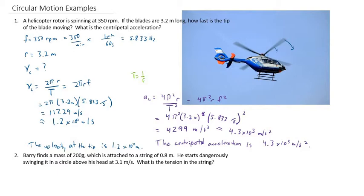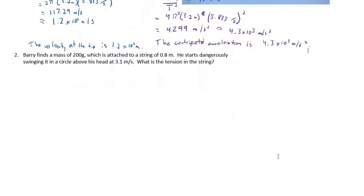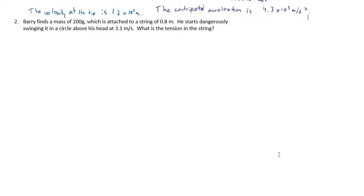Cool. Let's try another example. Barry finds a mass of 200 grams, which is attached to a string of 0.8 meters. And since Barry is a dangerous person, he starts swinging this thing in a circle above his head when it's traveling at 3.1 meters per second. And we're asked to find what is the tension in the string.